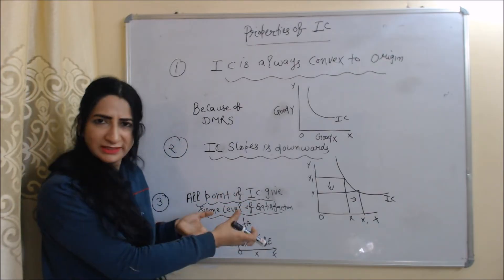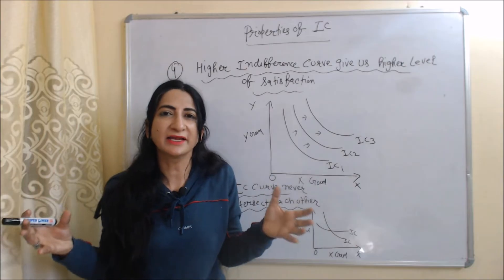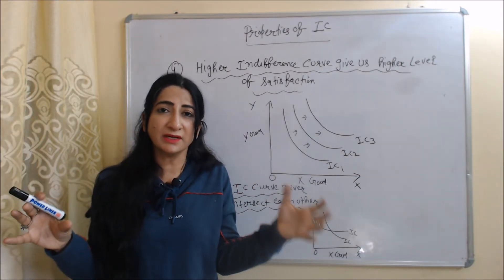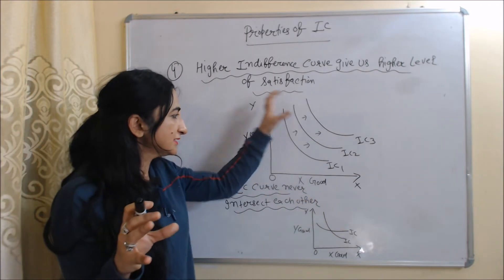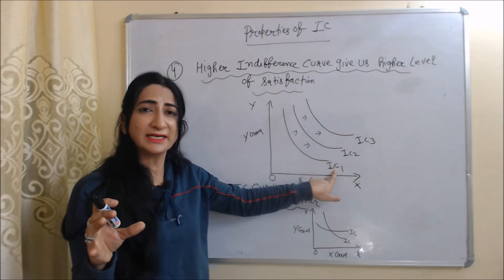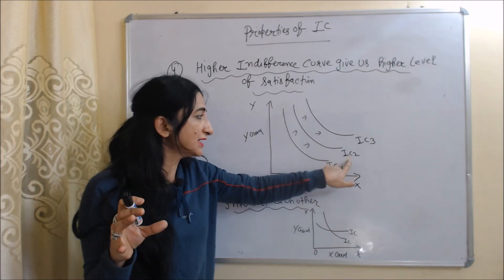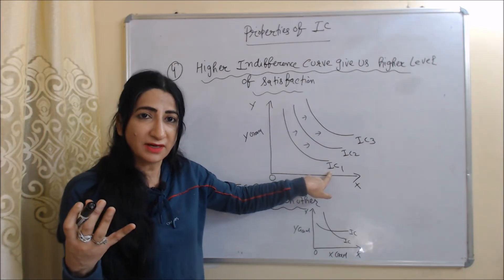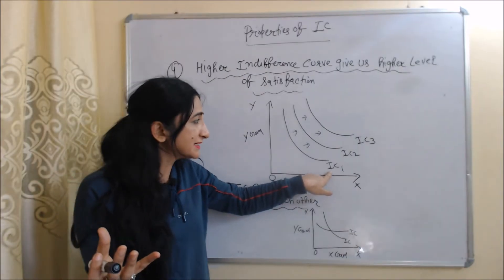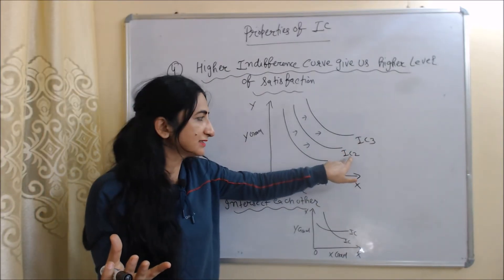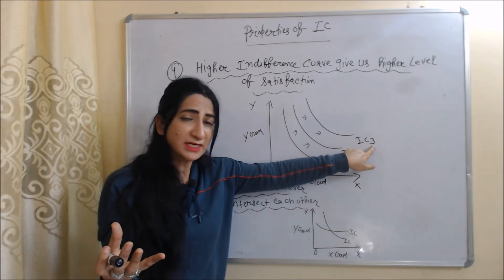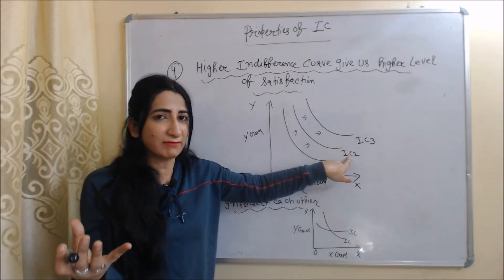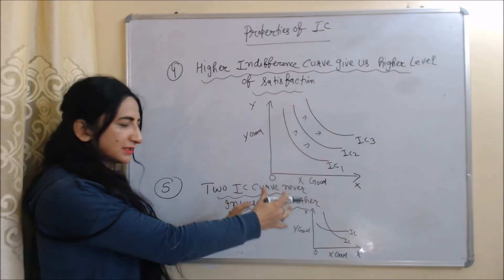The fourth property is that a higher indifference curve gives a higher level of satisfaction. In the diagram, indifference curve 2 is higher than IC1, so it gives more satisfaction. Similarly, IC3 is higher than IC2, giving even more satisfaction. The fifth and last property is that two indifference curves never intersect with each other.